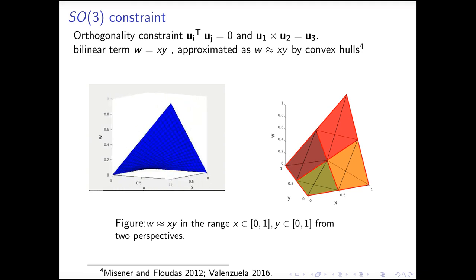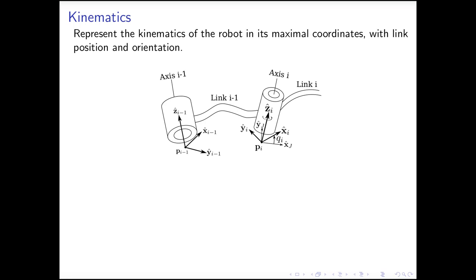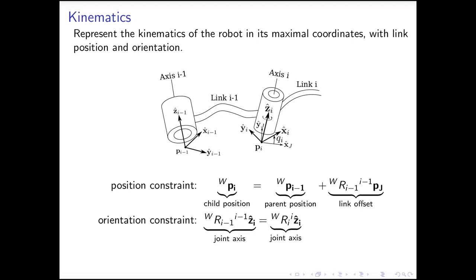How shall we use this SO(3) relaxation? We will represent the kinematics of the robot in its maximal coordinates, with both link position and orientation as decision variables, and require that the link rotation matrix to satisfy the SO(3) relaxation. We also need to impose the kinematic constraints, that two links are connected together through a joint. To do so, we impose a position constraint on the child link, and an orientation constraint on the axis of the connecting joint. Both constraints are linear with respect to the decision variables.